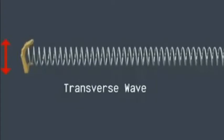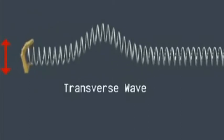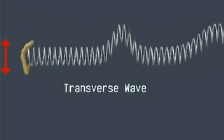There are different parts of a wave: the crest and trough, the amplitude, the wavelength, and the frequency.